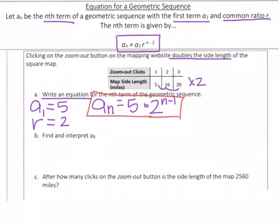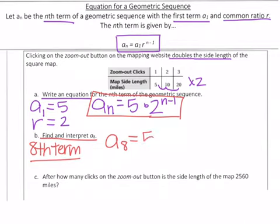Now on B, they're asking us to find and interpret a_8. They're wanting us to find the 8th term. Remember n stands for term, so the 8th term. So we're just going to plug in that number. So a_8, which means the 8th term is 5 times 2^(8-1). Alright, so now let's go ahead and simplify that exponent.